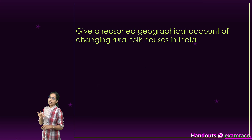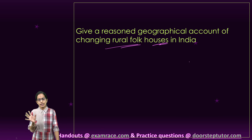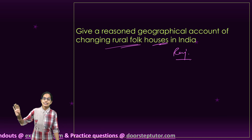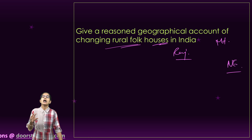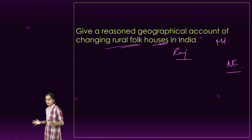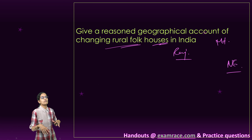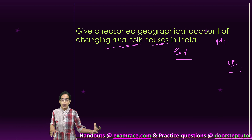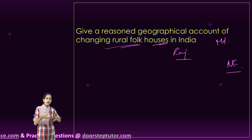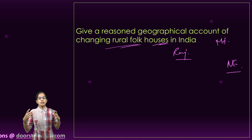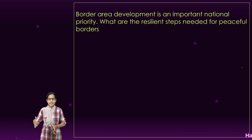The next question covers the geographical account of changing rural folk houses in India. We need to address types of houses by region — the far desert areas of Rajasthan, mountainous terrains, and the northeast. Different materials are used: in most of Rajasthan you see flat mud houses, in the northeast bamboo houses, and in hilly areas wooden houses. How geographical region changes housing and dwelling patterns is a topic covered separately in our lecture.